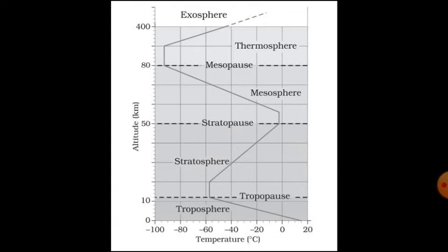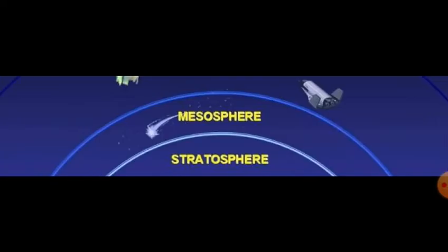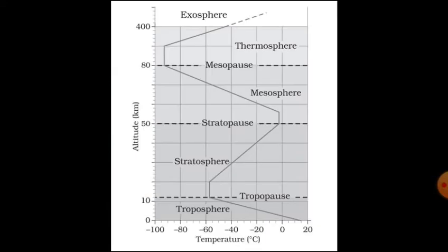Mesosphere. Above the stratosphere is the mesosphere which extends up to a height of 80 km. Most meteors burn up in the mesosphere. As we go higher in the mesosphere, it becomes cooler. The coldest temperature in the earth's atmosphere, about minus 90 degrees Celsius, are found near the top of the mesosphere.